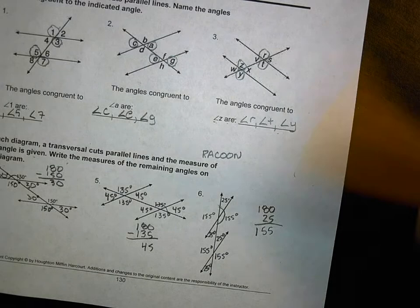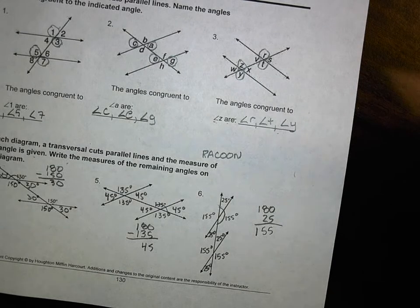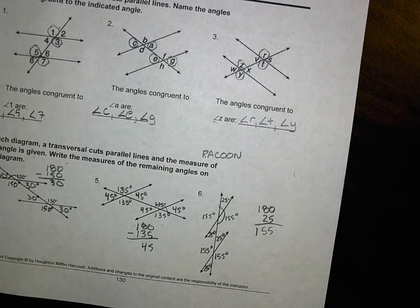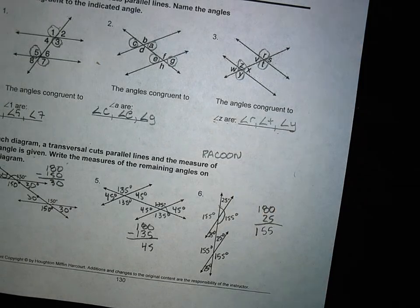And that's that in a nutshell. Remember, parallel lines cut by a transversal, we only really have two angle measurements. There are eight total angles created, so four are one measurement, four are the other. Good job. Keep it going.